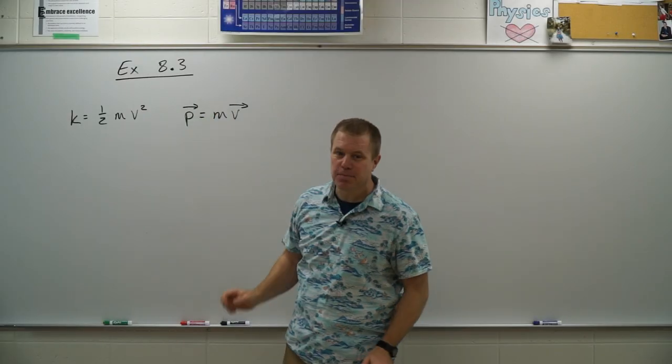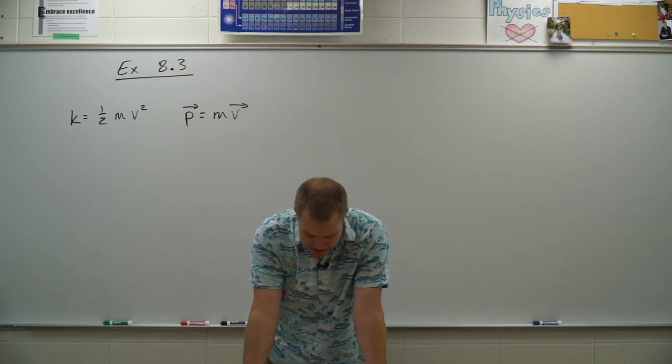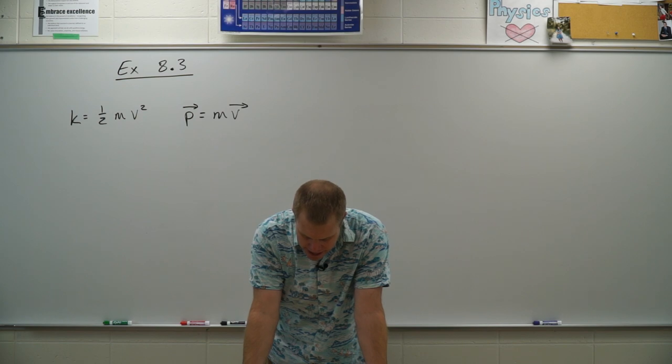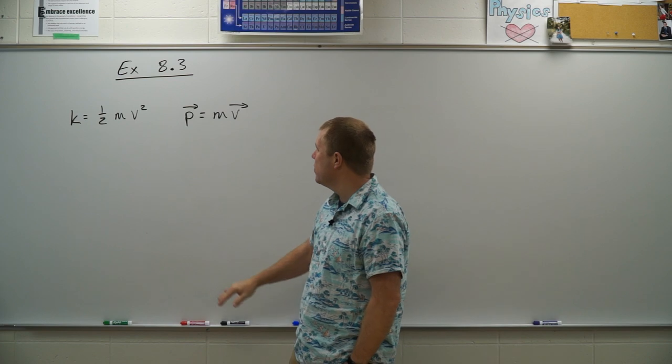Example 8.3 says show that the kinetic energy k and the momentum p of a particle with mass m are related by kinetic energy equals momentum squared divided by 2m.